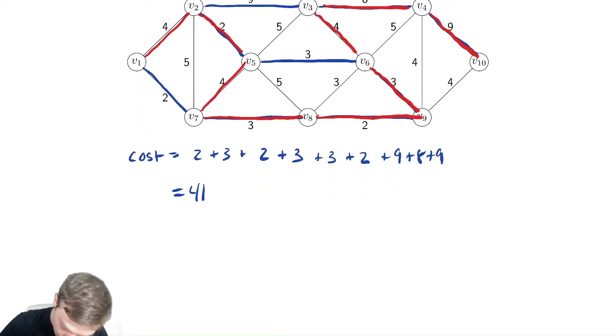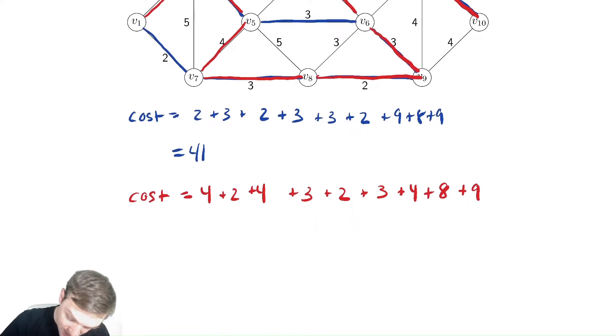So we have cost is equal to 4 plus 2 plus 4 plus 3 plus 2 plus 3 plus 4 plus 8 plus 9. Let's see how this does. So we have 10, 15, 22, 30, 39, so we did better.